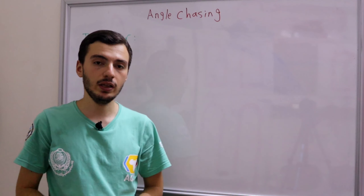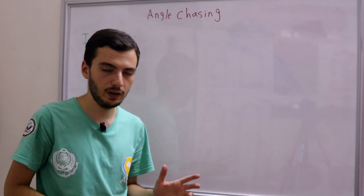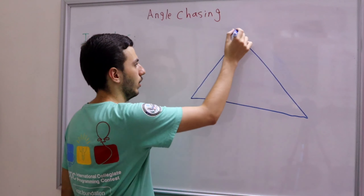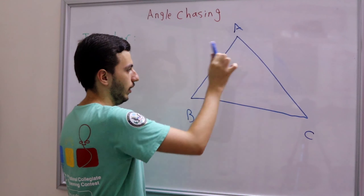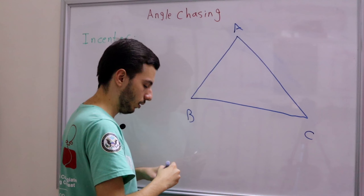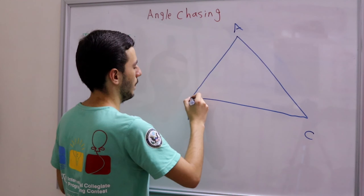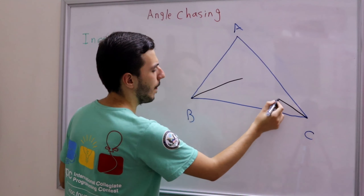So what is the second definition of the incenter? It's very famous — it's the concurrency point of the three internal angle bisectors of triangle ABC. Let's draw triangle ABC and then draw the angle bisectors of angles B and C in a different color. These two bisectors meet at the incenter, which we call I.